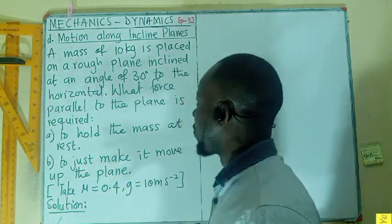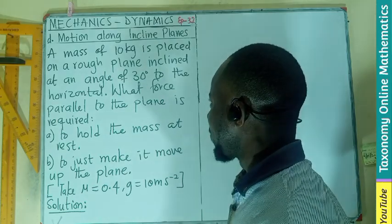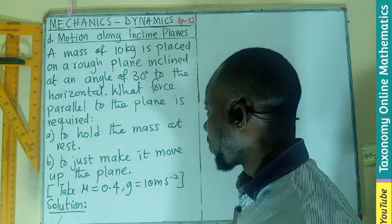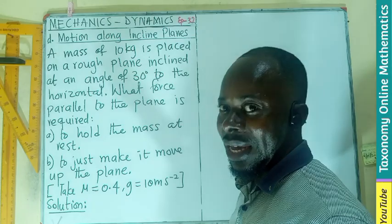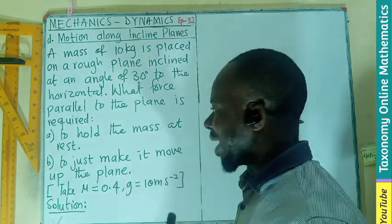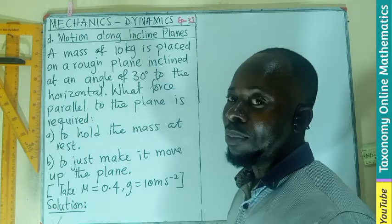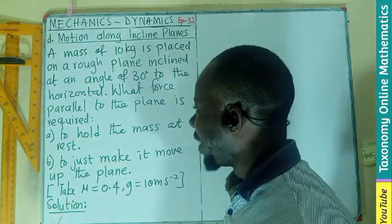A mass of 10 kg is placed on a rough plane inclined at an angle of 30 degrees to the horizontal. What force parallel to the plane is required: A) to hold the mass at rest, B) just to make it move up the plane? These are the informations we need.